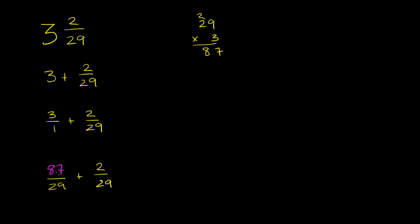Now we're ready to add. 87/29 plus 2/29 equals, we have our denominator of 29, 87 plus 2 is 89. And it looks like we're done.